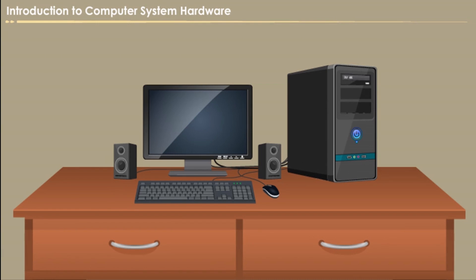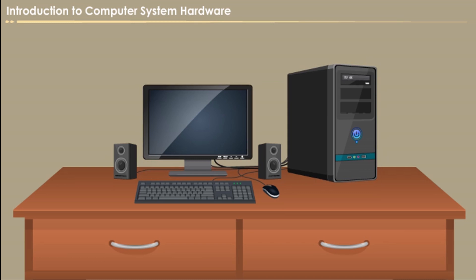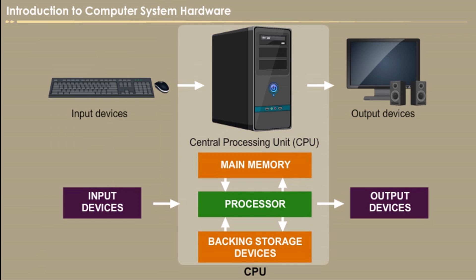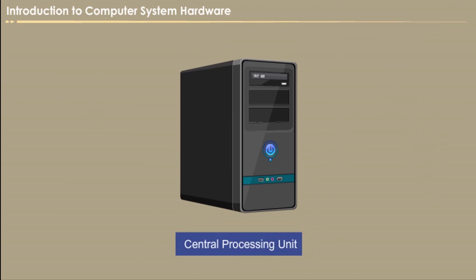A computer is an electronic device which is capable of receiving information — that is, data — from the user through an input device, perform a sequence of operations in accordance with a predetermined set of procedural instructions called a program, and it enables to produce a result through the output devices. The computer system hardware comprises of three main components: input devices used to get input from the user, central processing unit (CPU) which processes the information, and output devices used to display the output.